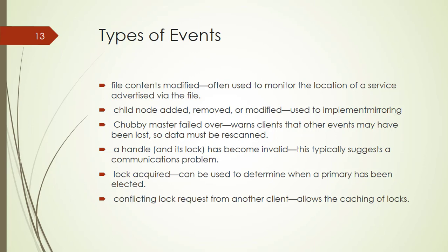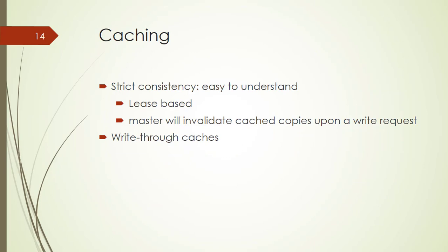Chubby also maintains cache consistency. Caching reduces read traffic for file data and node metadata, including file absence, in a consistent write-through cache held in memory. The cache is maintained by a lease mechanism which works on the consistency problem — the protocol ensures that the client sees either a consistent view of Chubby state or an error. When file data or metadata is to be changed, the modification is blocked while the master sends invalidations to every client that may have cached it. This mechanism sits on top of keep-alive RPCs.